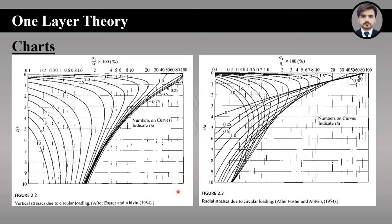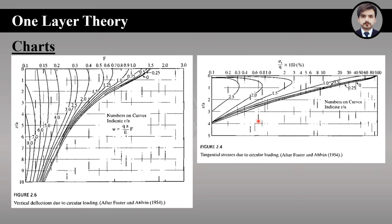To use the charts, we have two input parameters: z/a and r/a. The x-axis goes from 0 to 10 representing values of z/a, and the lines represent values of r/a. For example, if z/a = 3 and r/a = 6, we go to 3 on the axis and read upward to get the value of σ_z/q. The same approach applies for σ_r and tangential stress. For vertical deflection, the formula is: deflection = (q × a / E) × F, where F is the deflection factor read from the chart.